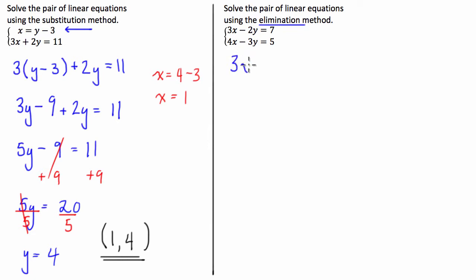So we have 3x minus 2y equals 7 and we have 4x minus 3y equals 5.